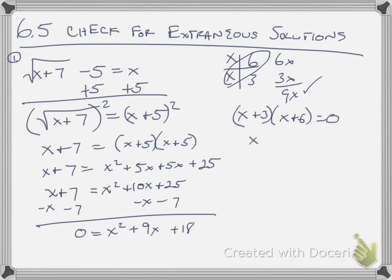So I get x plus 3 times x plus 6 is equal to 0. And to solve, set each of them equal to 0. So I get x is equal to negative 3 and negative 6. I'm going to check though, that both of them work.